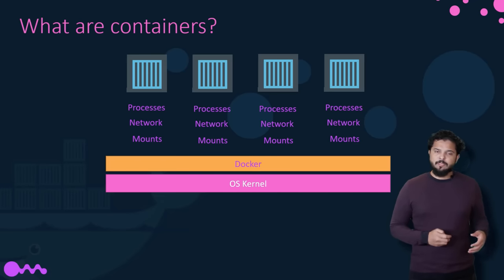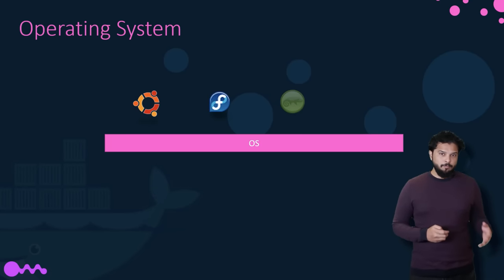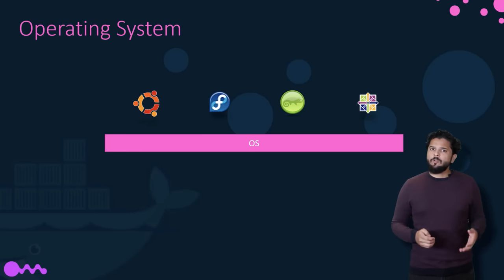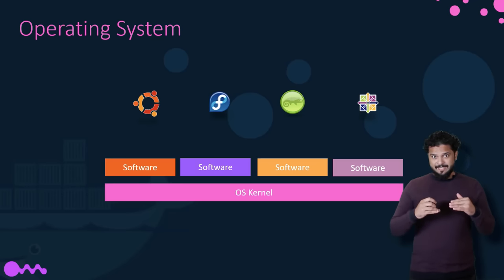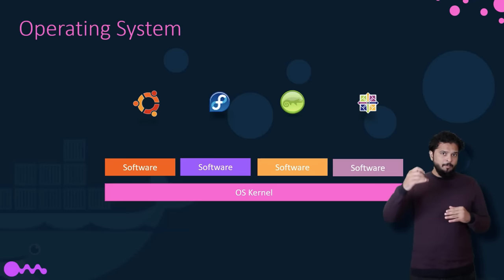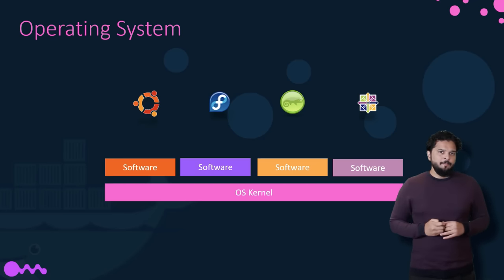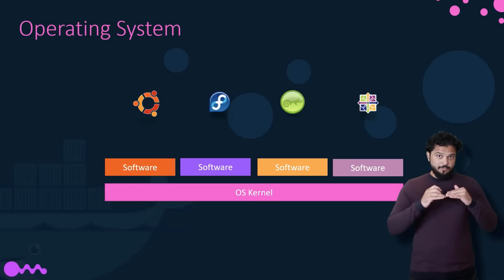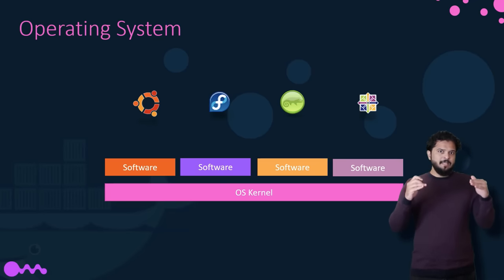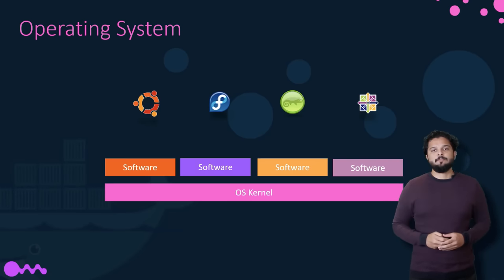To understand how Docker works, let us revisit some basic concepts of operating systems. If you look at operating systems like Ubuntu, Fedora, Susie or CentOS, they all consist of two things: an OS kernel and a set of software. The OS kernel is responsible for interacting with the underlying hardware. While the OS kernel remains the same — which is Linux — it's the software above it that makes these operating systems different. This software may consist of a different user interface, drivers, compilers, file managers, developer tools, etc. So you have a common Linux kernel shared across all OSes and some custom software that differentiates operating systems from each other.